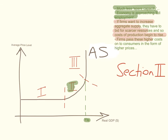Firms will pass these higher costs onto consumers in the form of higher prices. So in section two, as the economy is approaching full employment but not quite there yet, any increase in aggregate demand will lead to competing for scarcer resources and therefore begin to push the costs of production and hence the average price level higher. The average price level will start to rise.